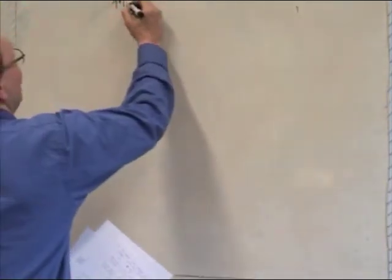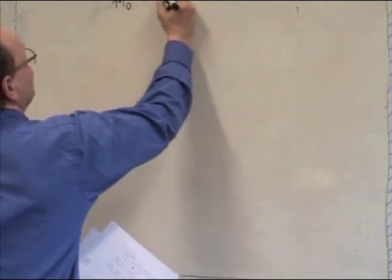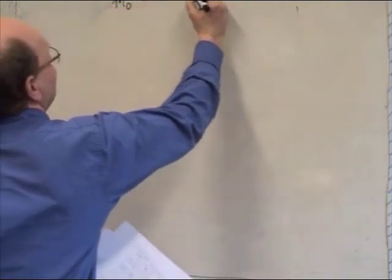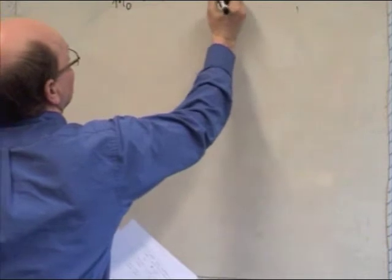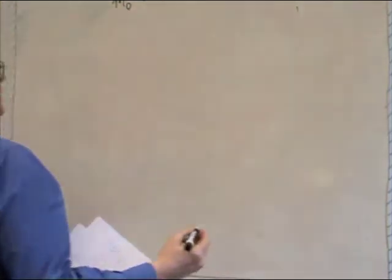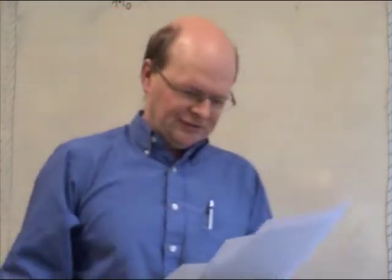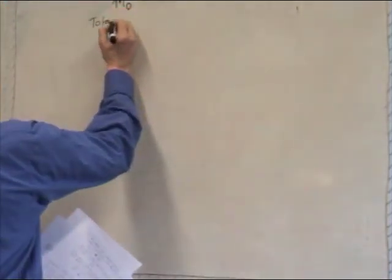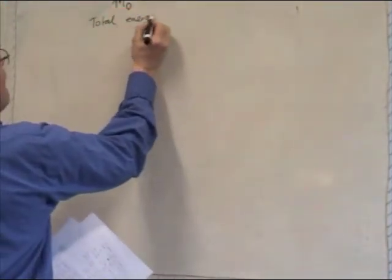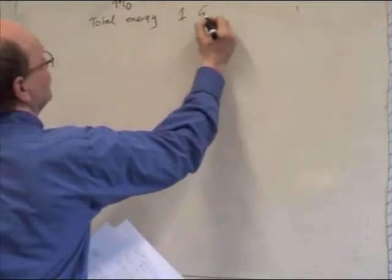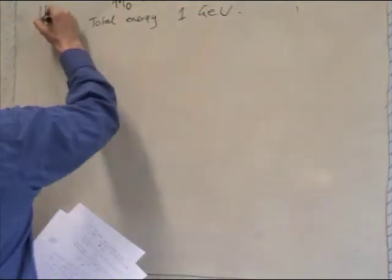So that means M nought, which is rest mass, is 131 MeV upon C squared. And the first part of the question is that its total energy is 1 GeV, the Pi meson.